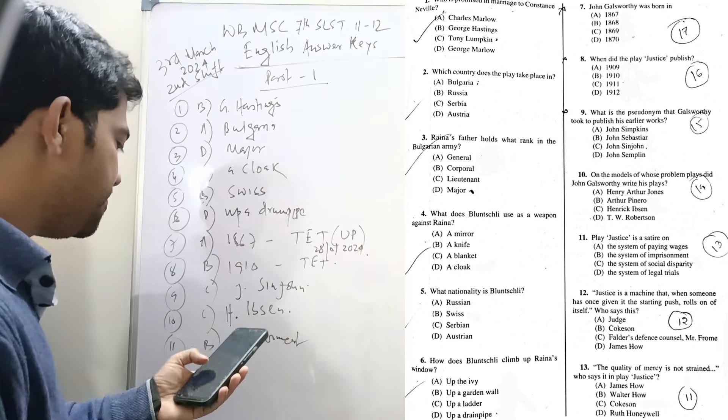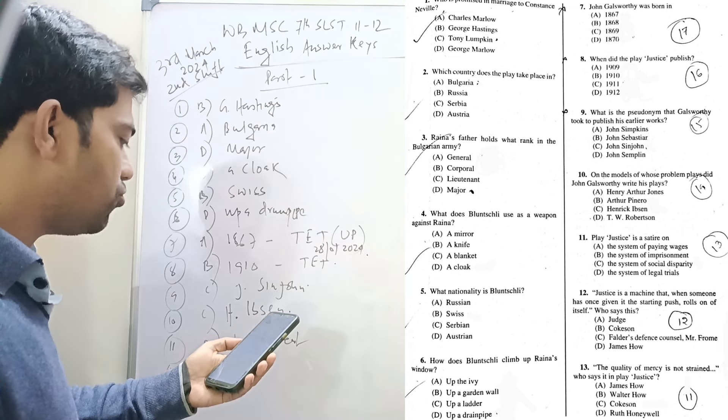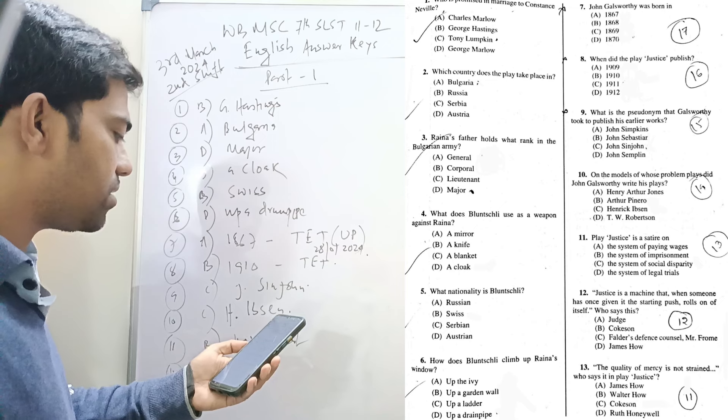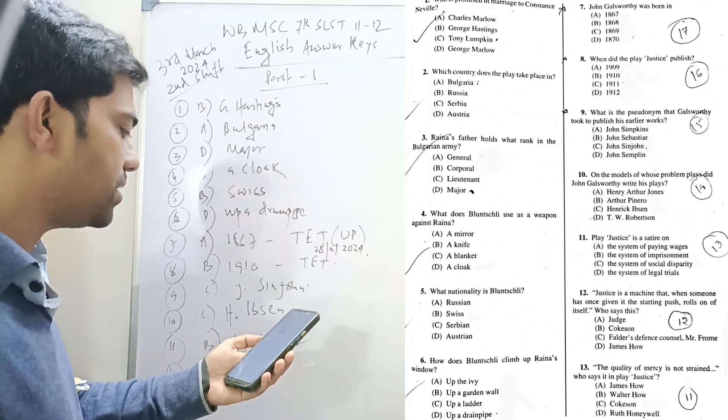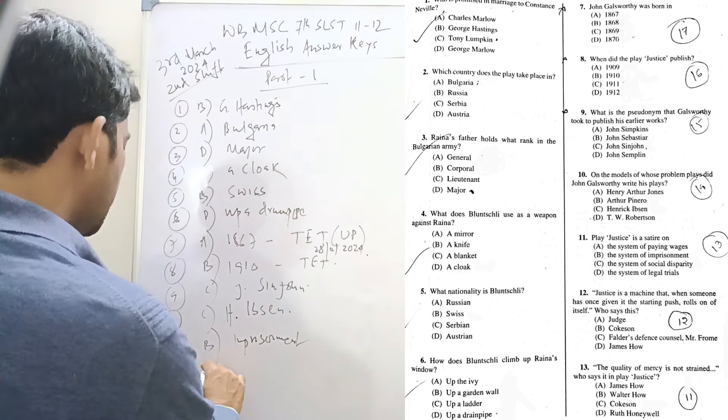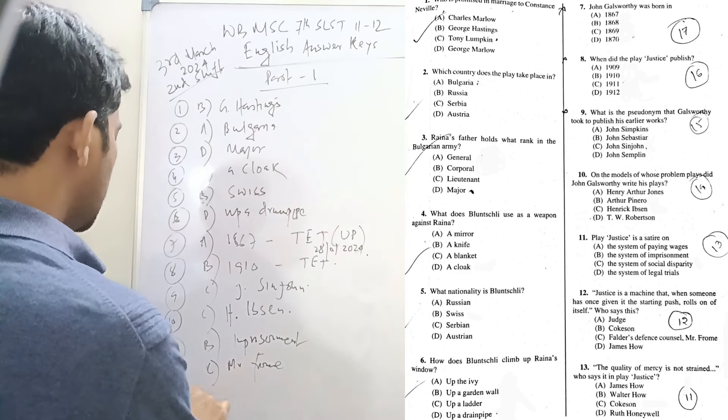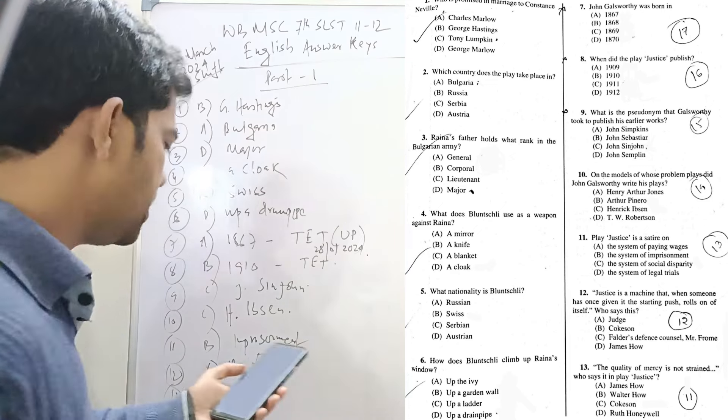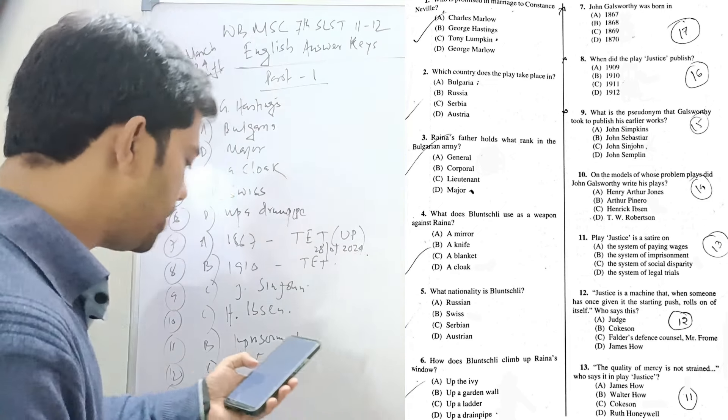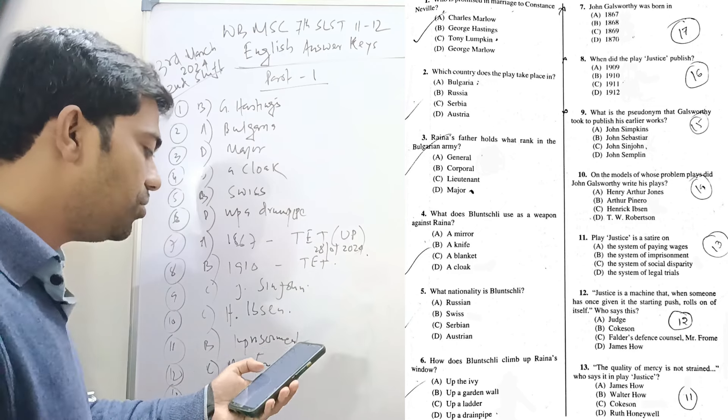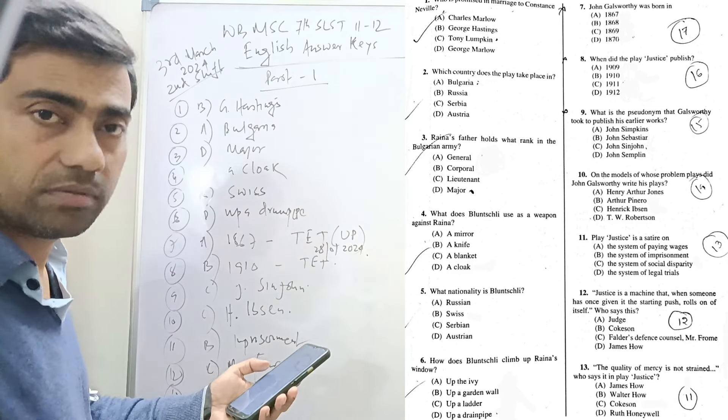Question twelve: 'Justice is a machine that when someone has given it the starting push rolls on of itself.' Who says this? Mr. C, the defense counsel. Thirteen: 'The quality of mercy is not strained.' It is again repeated from the 19 syllabus.